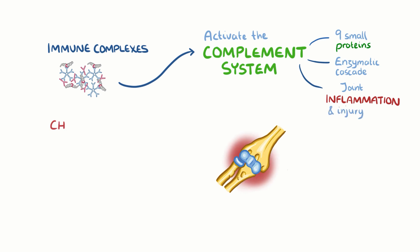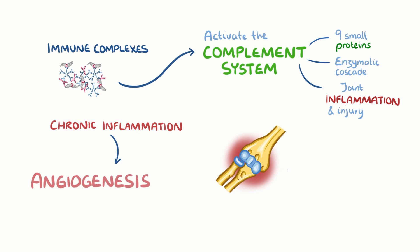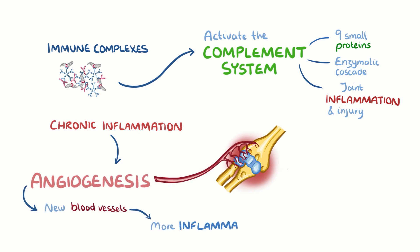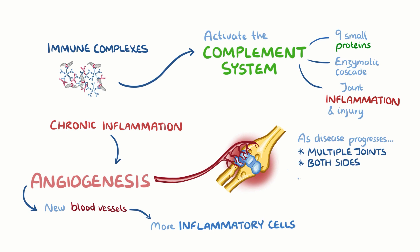The chronic inflammation causes angiogenesis, or the formation of new blood vessels around the joint, which allows even more inflammatory cells to arrive. As the disease progresses, multiple joints on both sides of the body get inflamed and gradually destroyed.